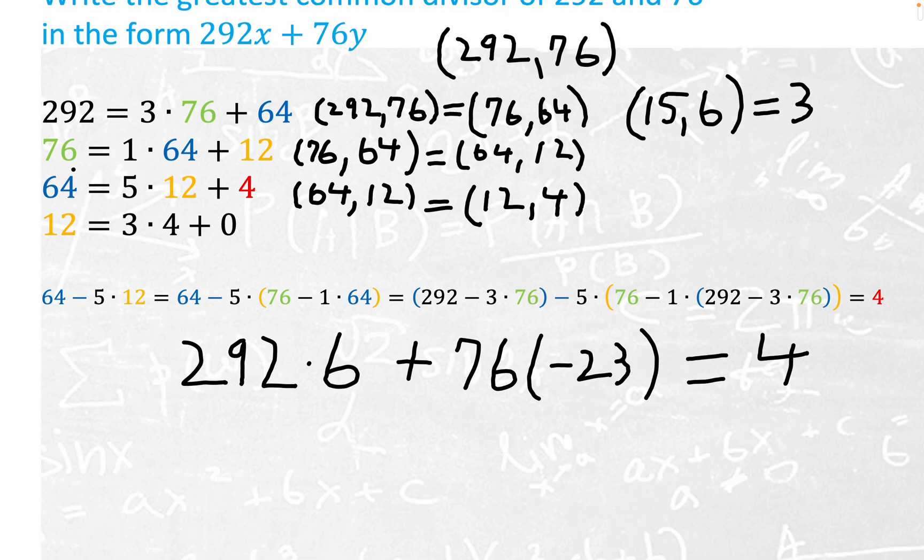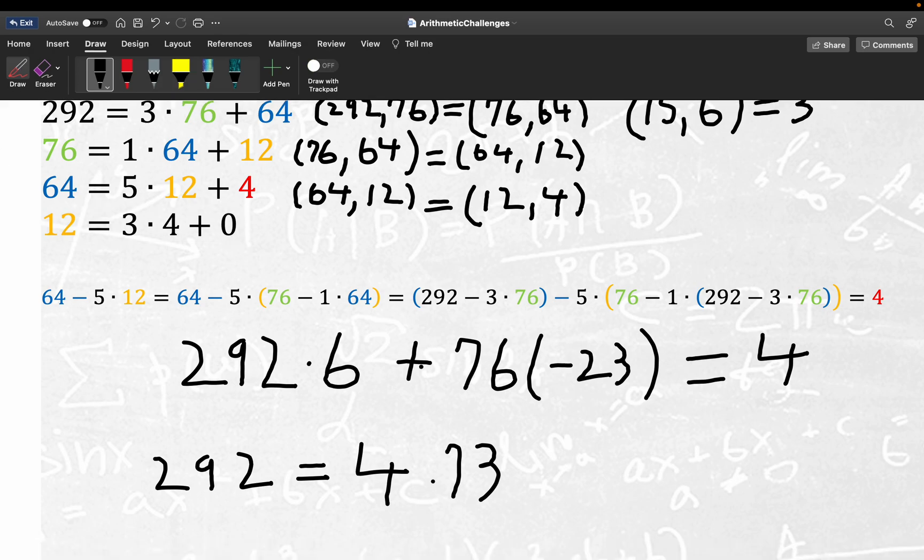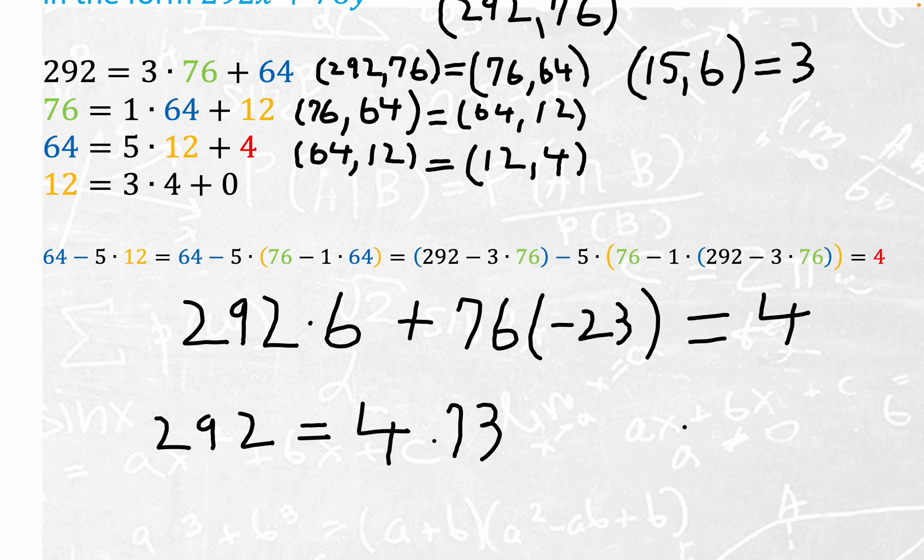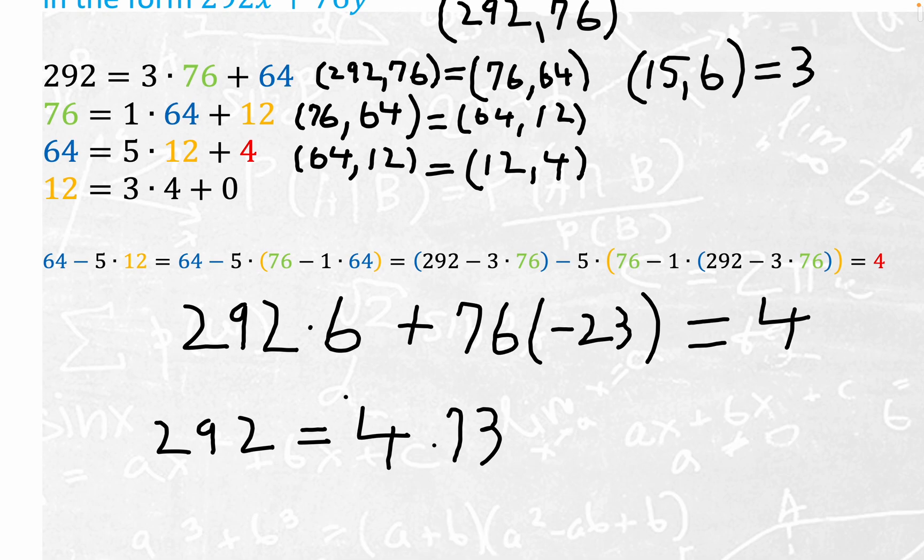Let me write this better for you. 292 is equal to 4 times 73. This would have been enough to determine the greatest common divisor, but getting it as a linear combination would have been a lot more work if you didn't have this method. 4 times 73 is the 292. I'll go ahead and just circle the 4 right here.